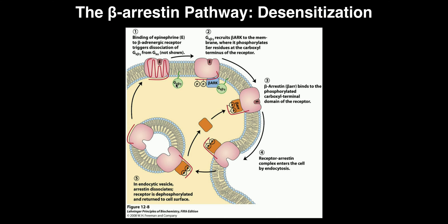What the G protein beta and gamma subunits can do under certain conditions is recruit a protein called beta-arrestin receptor kinase to the membrane, and it will bind to the G protein-coupled receptor — the GPCR. I typically abbreviate it as BARK, and it's shown in blue there.